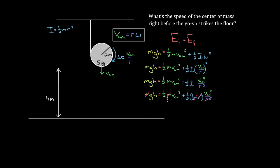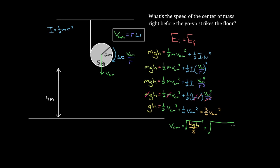Now we can solve. The left-hand side is gh, and the right-hand side simplifies to one-half v-cm squared plus one-fourth v-cm squared, which equals three-fourths v-cm squared. Solving for v-cm, we multiply gh by four-thirds and take the square root, giving v-cm equals the square root of four gh over three. Plugging in g = 9.8 m/s², h = 4 m, we get a center of mass speed of 7.23 meters per second.